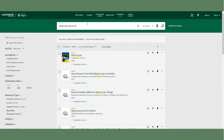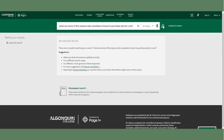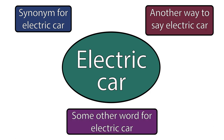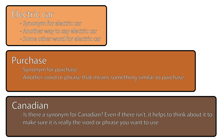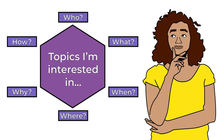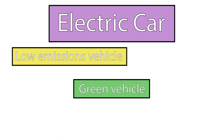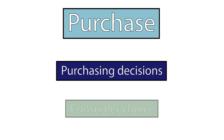What you don't want to do is just type in your whole question word for word. This is not the most effective way to search using library databases, or even the most effective way to search Google. After you've thought of your keywords, think about each of those main ideas and try to come up with other words that mean the same thing or express the same idea. Make a list of these words as you think of them. Another good place to help you think of these synonyms is your background research. Think about the reasons why someone might purchase an electric car and use these as search terms as well.